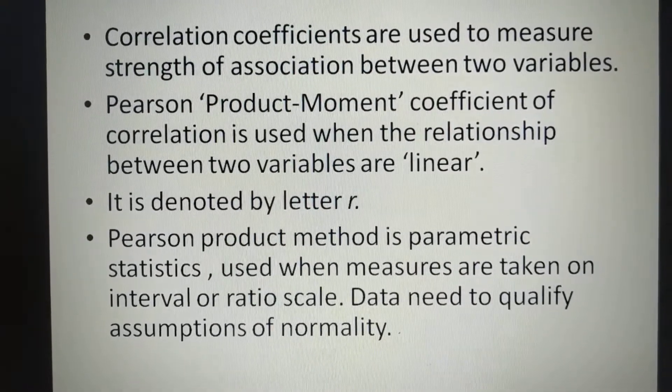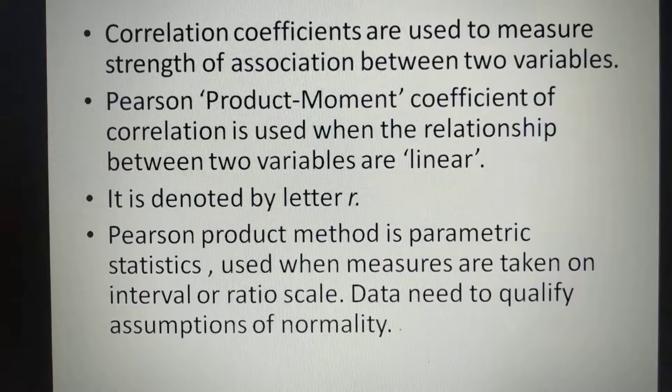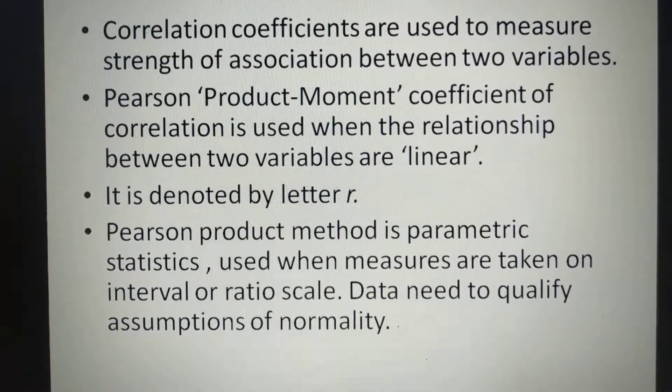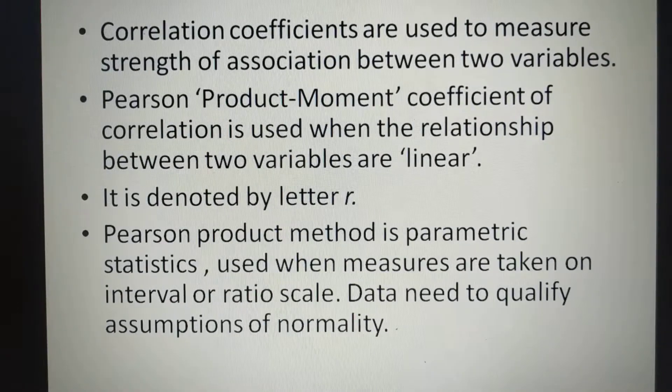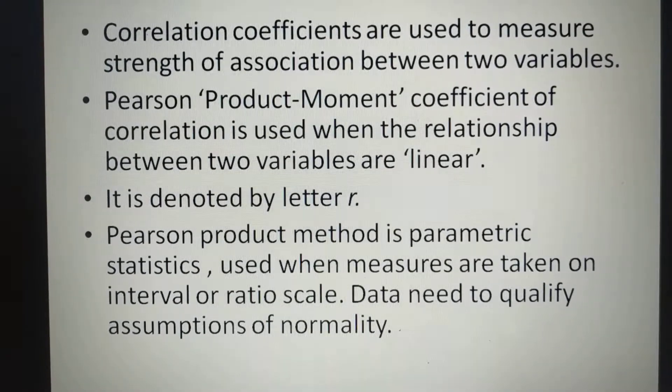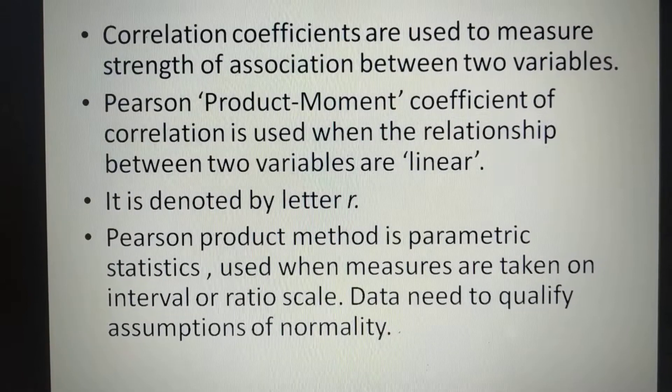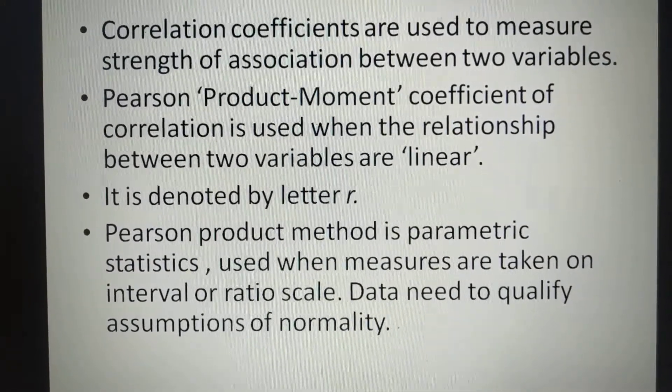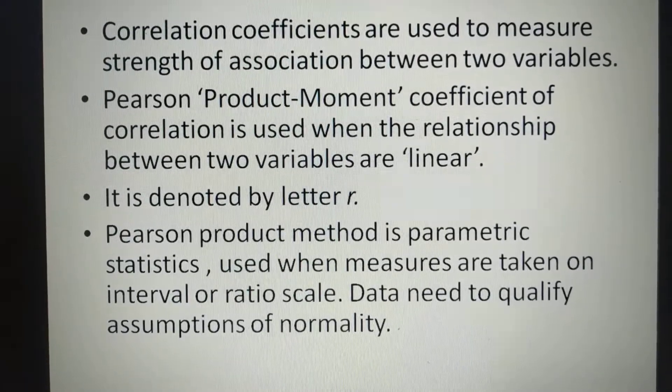Pearson product moment coefficient of correlation is used when the relationship between two variables are linear. It is denoted by letter R. Pearson product moment is parametric statistics used when measures are taken.